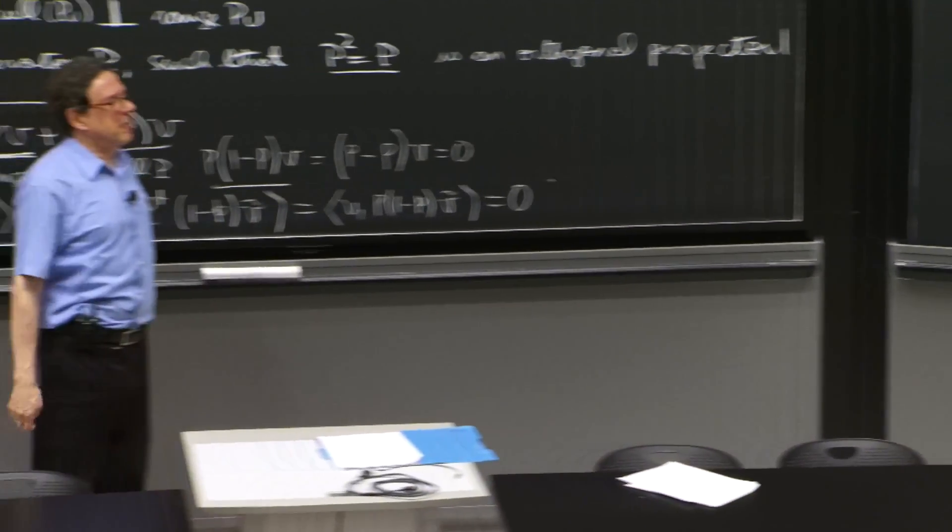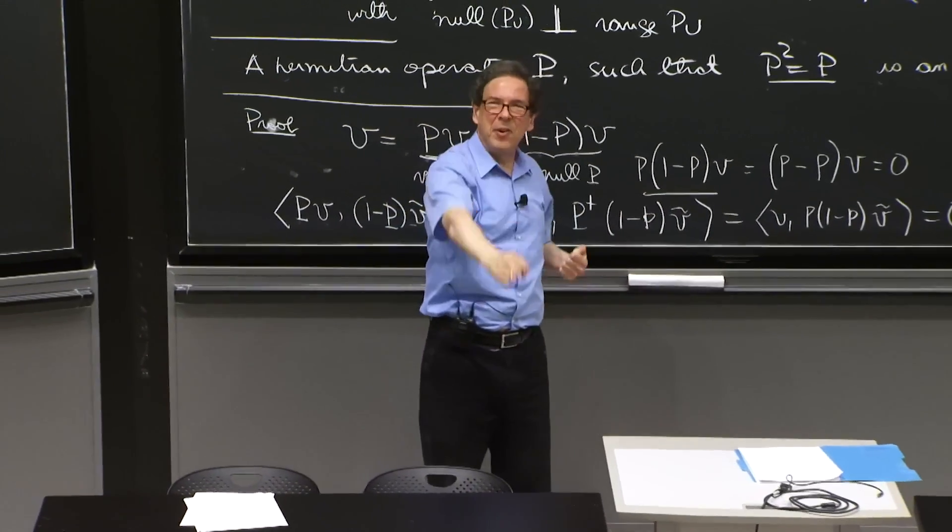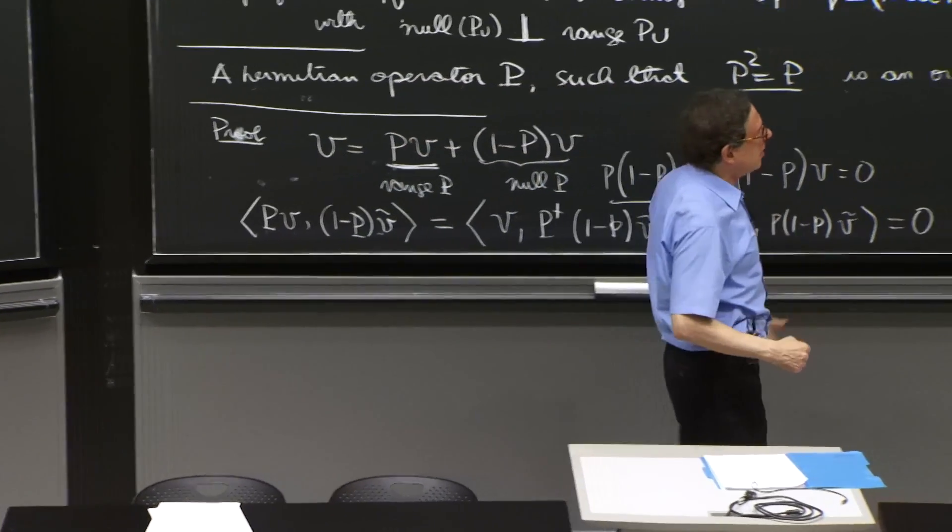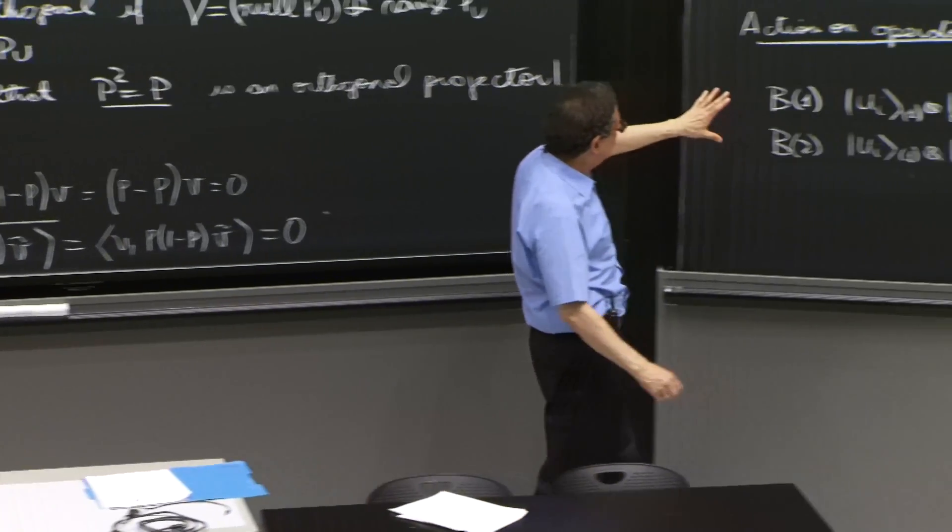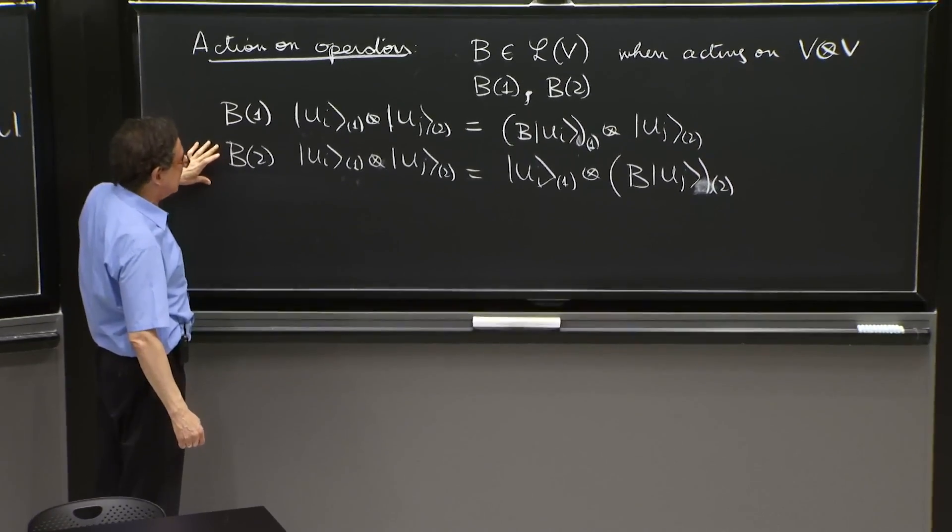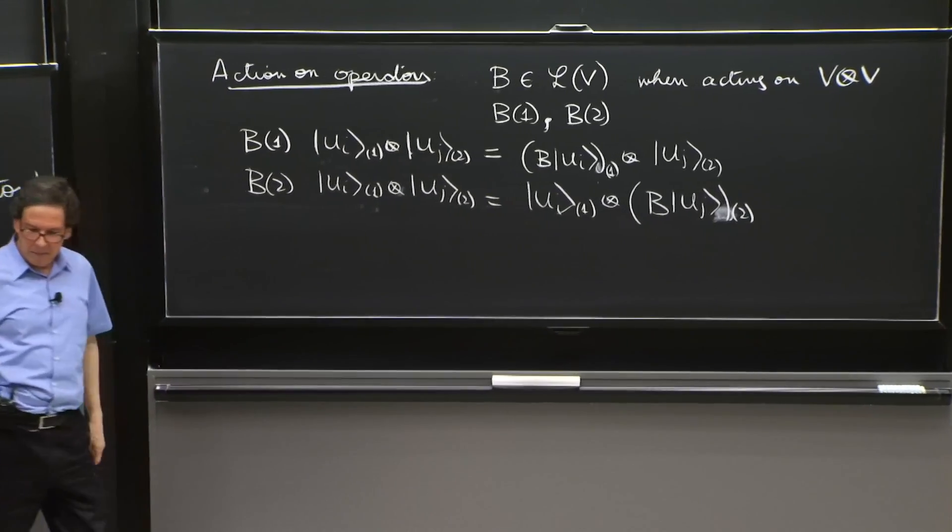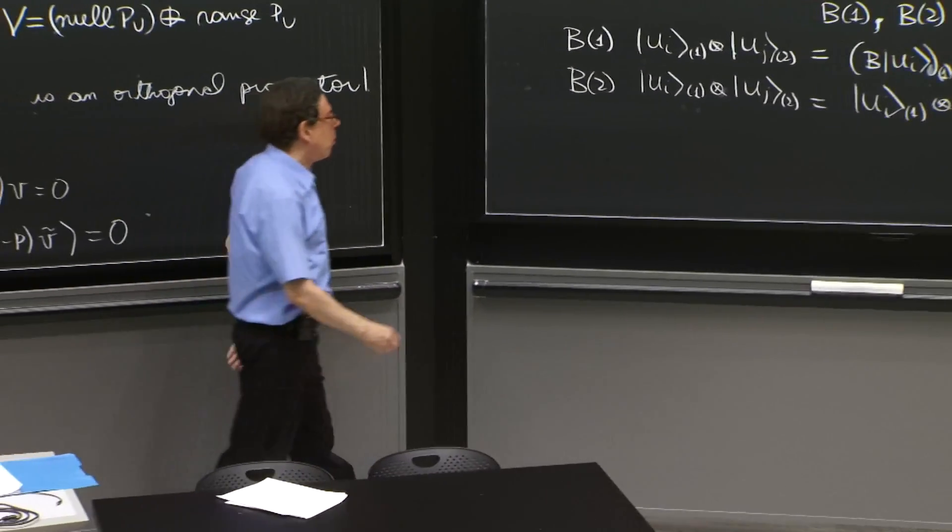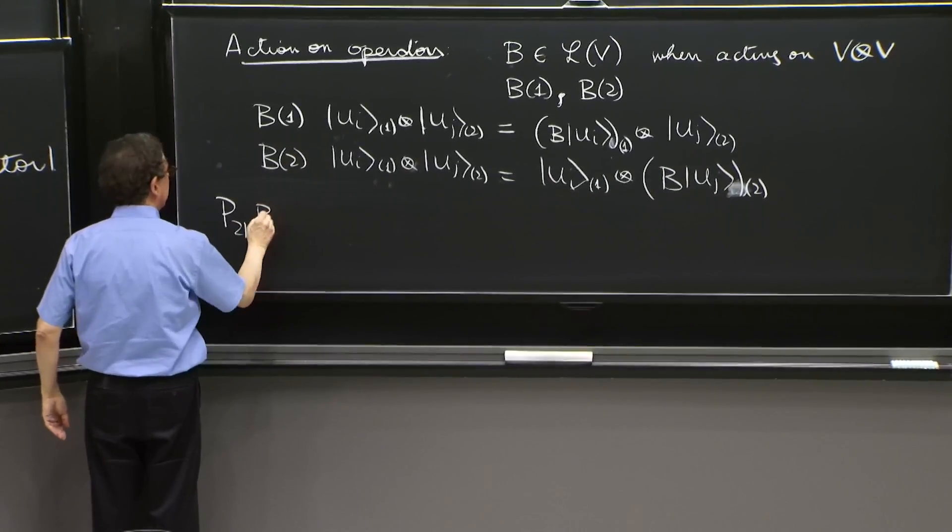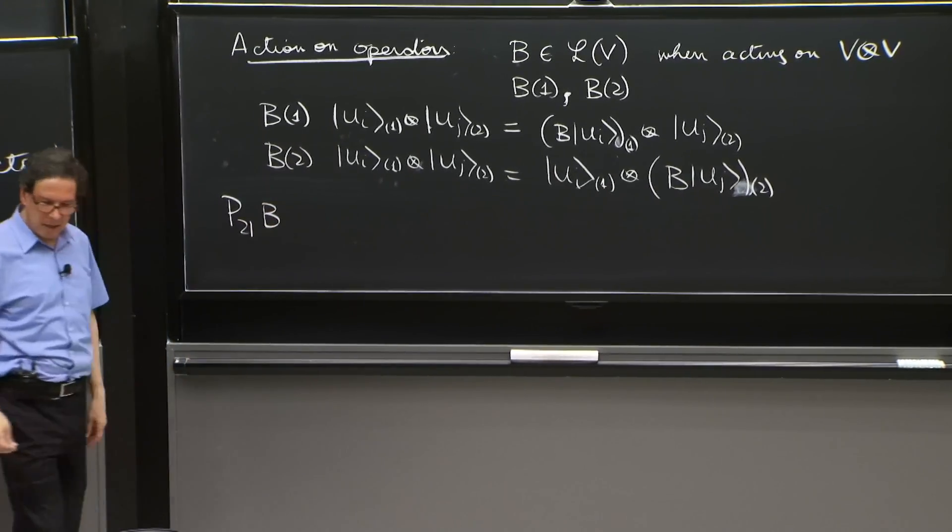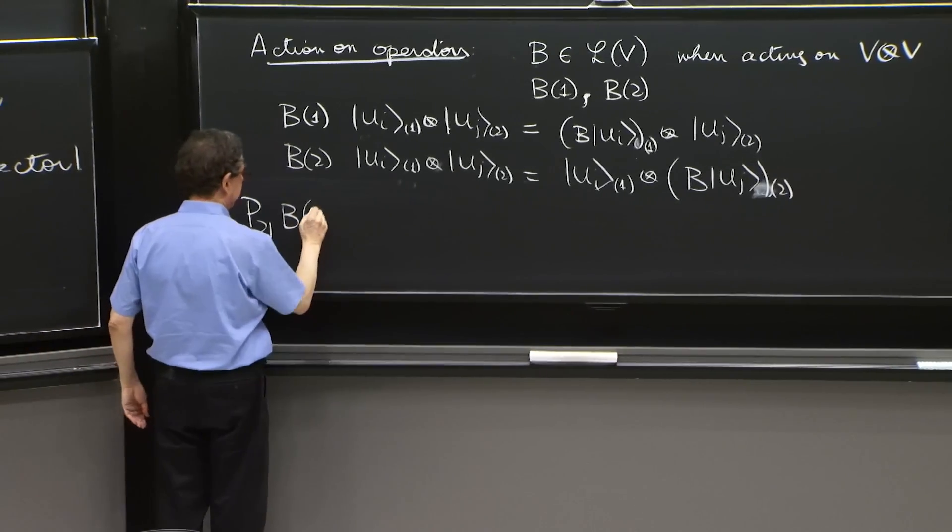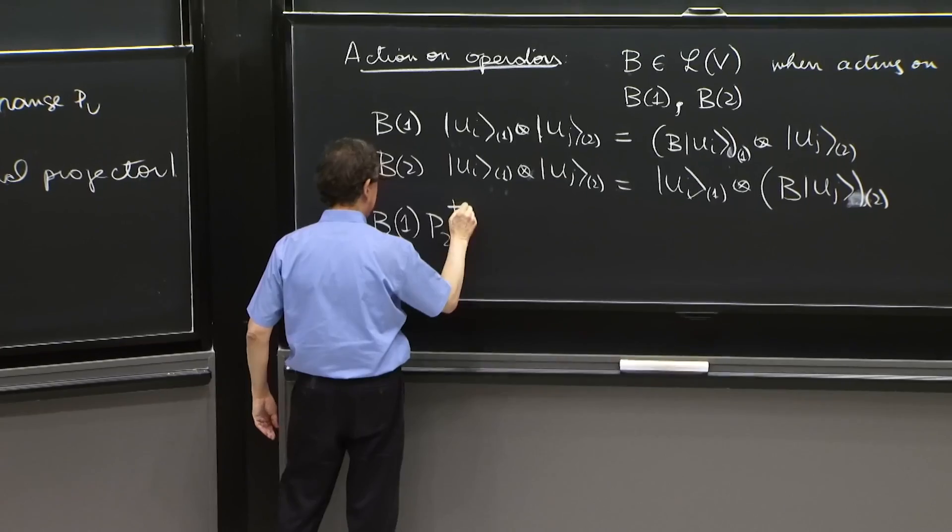So these are operators that act either on the first state or in the second state. So the permutation operators can do things to these operators as well. So we can ask a question. What is P21 B1 P21 dagger?